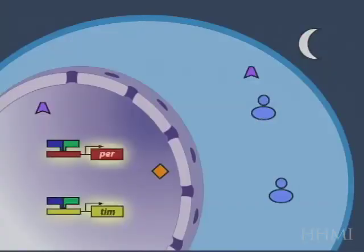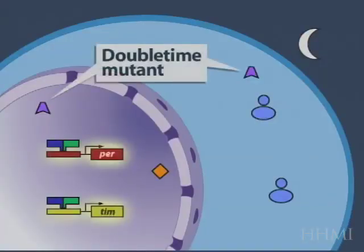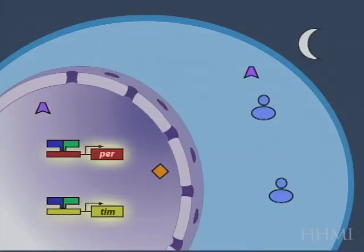Again, this now gives you a flavor for how the double-time mutant protein, this mutant kinase, which doesn't work very well, compares with its wild-type counterpart and the effect of that mutant on the cycle.